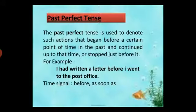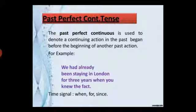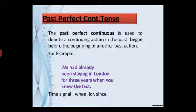Past perfect continuous tense is used to denote a continuing action in the past that began before the beginning of another past action. For example: 'We had already been staying in London for three years when you knew the fact.'